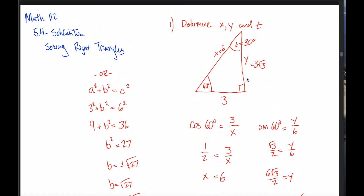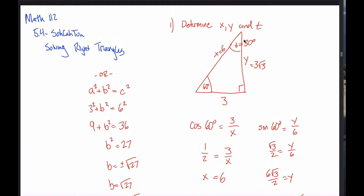The point I'm trying to make is you can use either of these angles, it doesn't matter, but be super careful: opposite and adjacent are defined relative to the angles. This side is not always adjacent, and this side is not always opposite. This is always the hypotenuse, but if I'm talking about this angle, this is opposite; if I'm talking about this other angle, this is opposite.